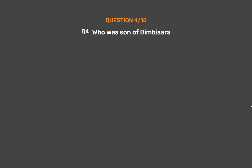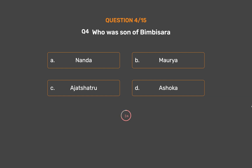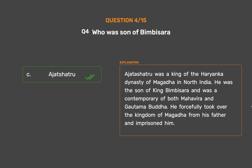Question No. 4. Who was the son of Bimbisara? Option A: Nanda. Option B: Morya. Option C: Ajatashatru. The correct answer is Option C: Ajatashatru. Ajatashatru was a king of the Haryanka dynasty of Magadha in North India. He was the son of King Bimbisara and was a contemporary of both Mahavira and Gautama Buddha. He forcefully took over the kingdom of Magadha from his father and imprisoned him.